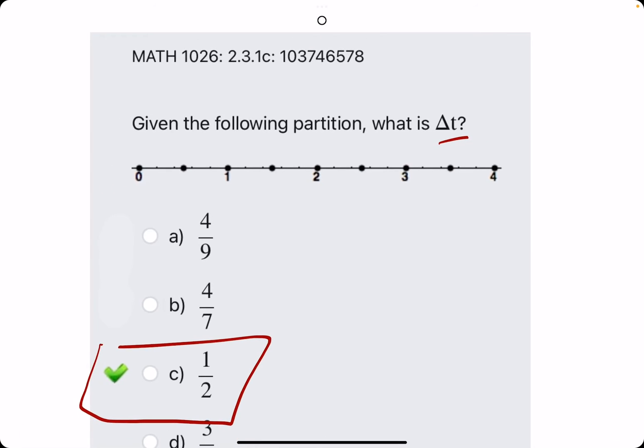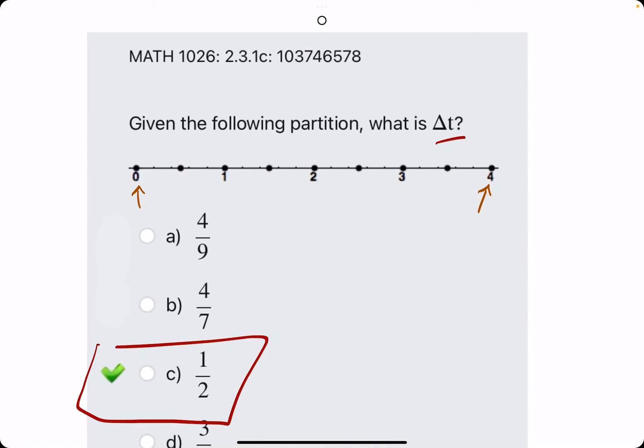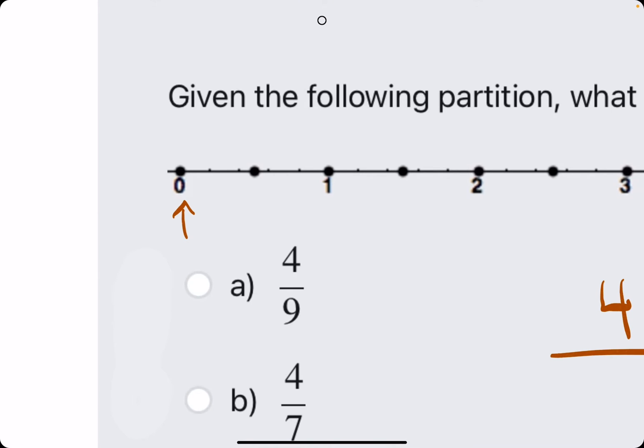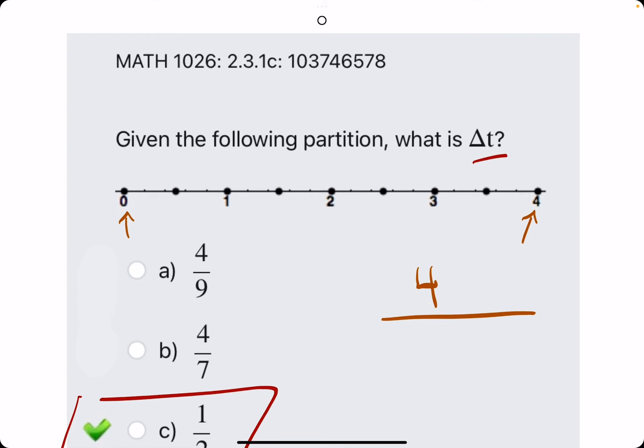Just to demonstrate: the difference from start to finish is four. So we take that total of four and we divide it by however many partitions there were. Keep in mind, partitions does not mean dots. It means really the number of dots minus one.